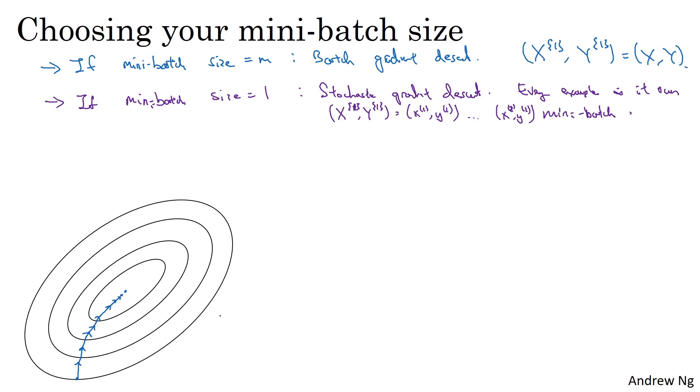In contrast, with stochastic gradient descent, if you start somewhere, then on every iteration you're taking gradient descent with just a single training example. So most of the time you head toward the global minimum, but sometimes you head in the wrong direction if that one example happens to point you in a bad direction. So stochastic gradient descent can be extremely noisy, and on average it'll take you in a good direction, but sometimes you'll head in the wrong direction as well.